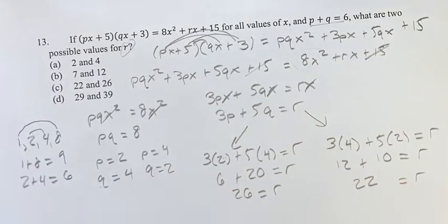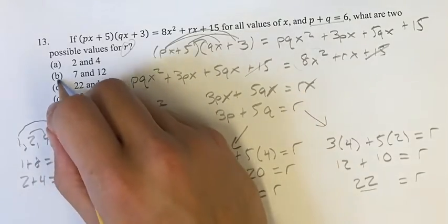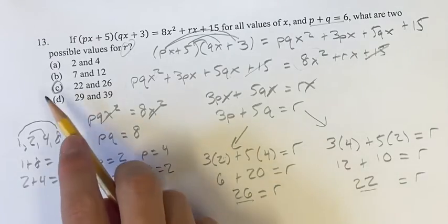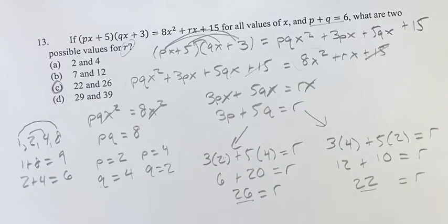So our two possible values for r in this situation, 26 and 22. So this does line up with our answer, so we don't have to mess with any fractions or anything. These are our two answers. It lines up with c, and that's going to be our final answer. As always, thank you for liking and subscribing, and I'll see you in the next video.